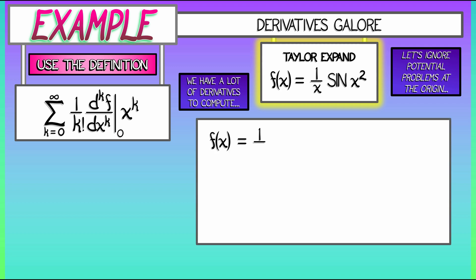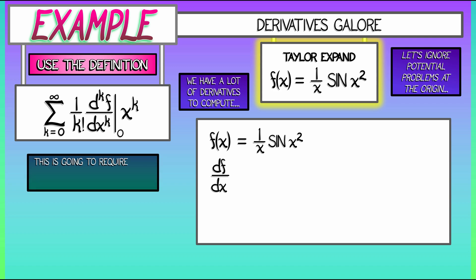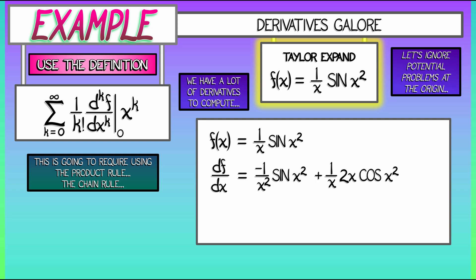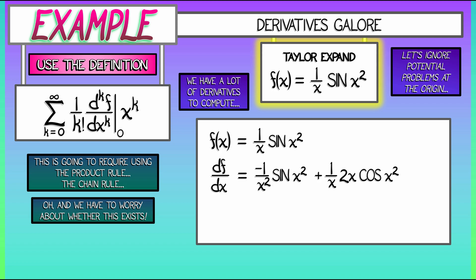So what's our function? (1/x) · sin(x²). What's the derivative? This is going to use the product rule and the chain rule. The derivative is the derivative of (1/x) — that's minus (1/x²) times sin(x²) — plus (1/x) times the derivative of sin(x²), which is 2x times cos(x²). Now we have zeros in the denominator when we evaluate at zero, but this evaluates to negative 1 plus 2, which equals plus 1.